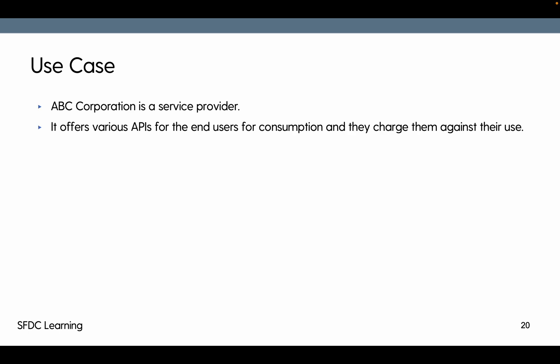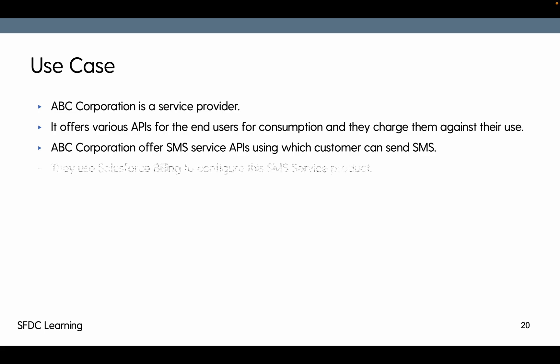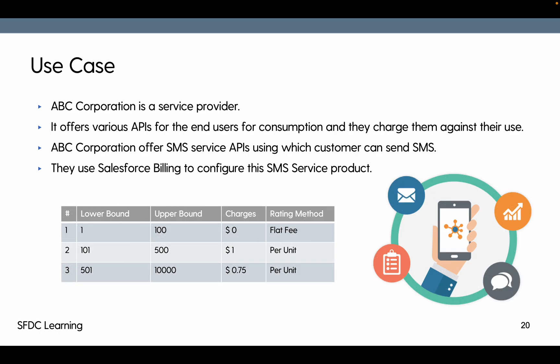Here is the use case: ABC Corporation is a provider that offers various APIs for end users for consumption and charges against that usage. ABC Corporation offers an SMS service API through which customers can send SMS messages, and they use Salesforce Billing to configure and bill this type of product.